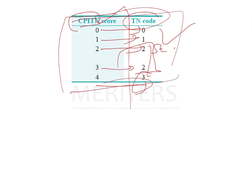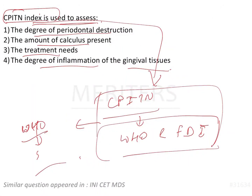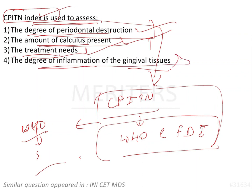Coming back to the original question: what does the CPITN index assess? The options were degree of periodontal destruction, amount of calculus, treatment needs, and degree of inflammation of gingival tissue. The answer is treatment needs, because CPITN stands for Community Periodontal Index of Treatment Needs. If you know the full form, you can directly answer the question. The answer is treatment needs.